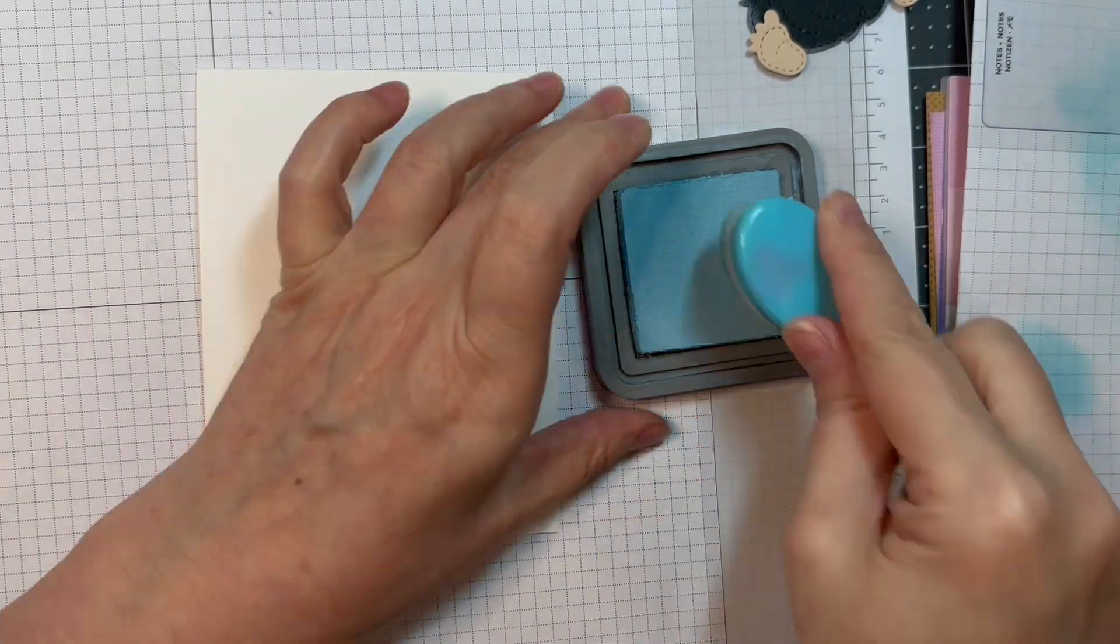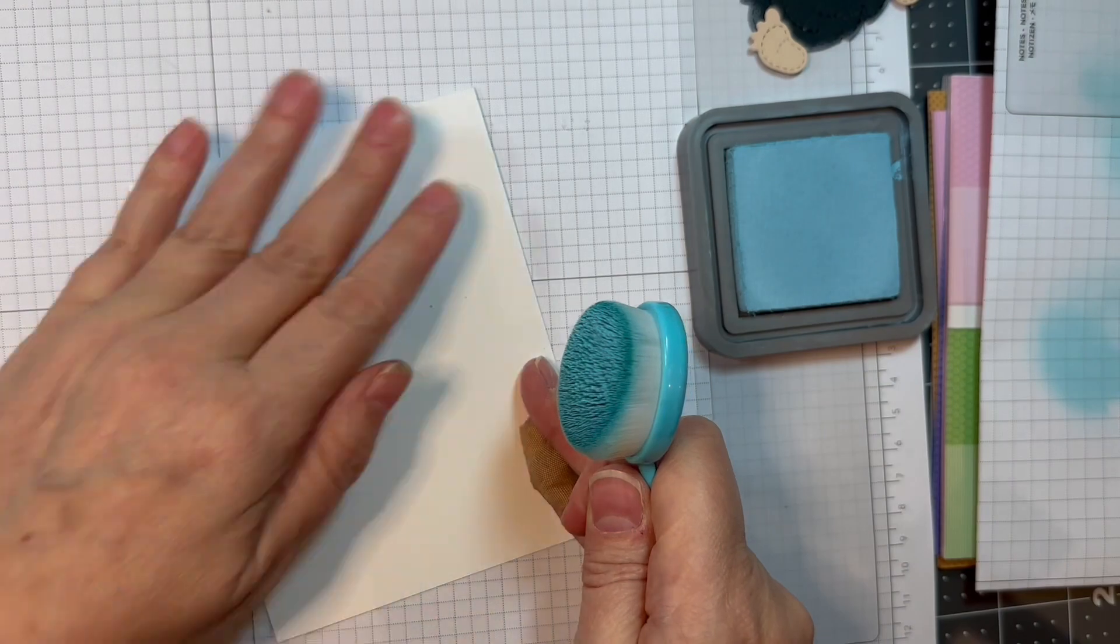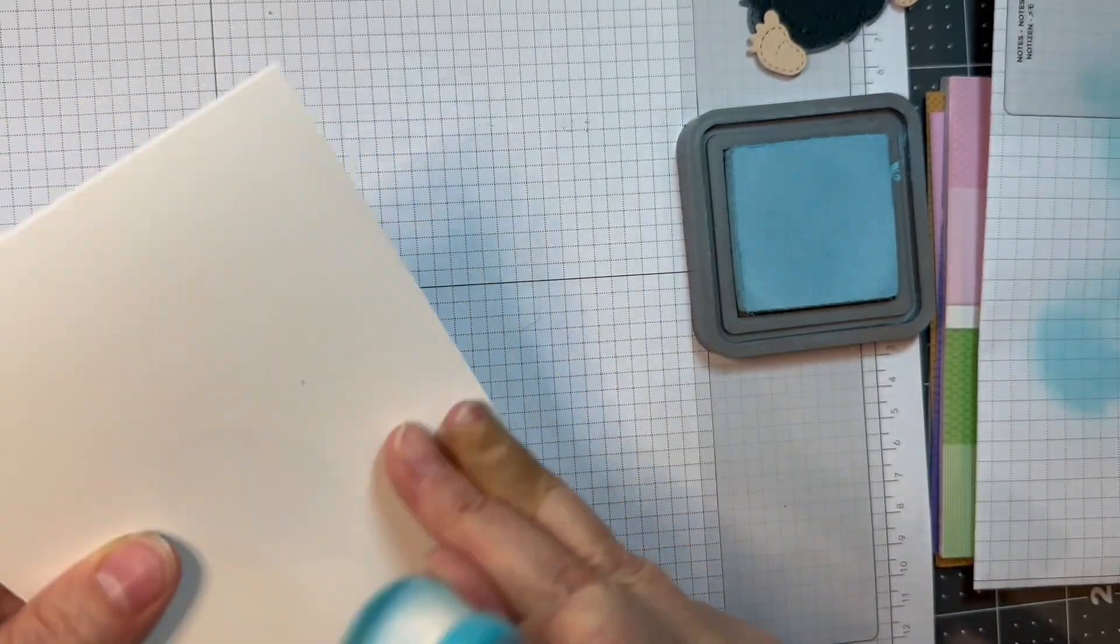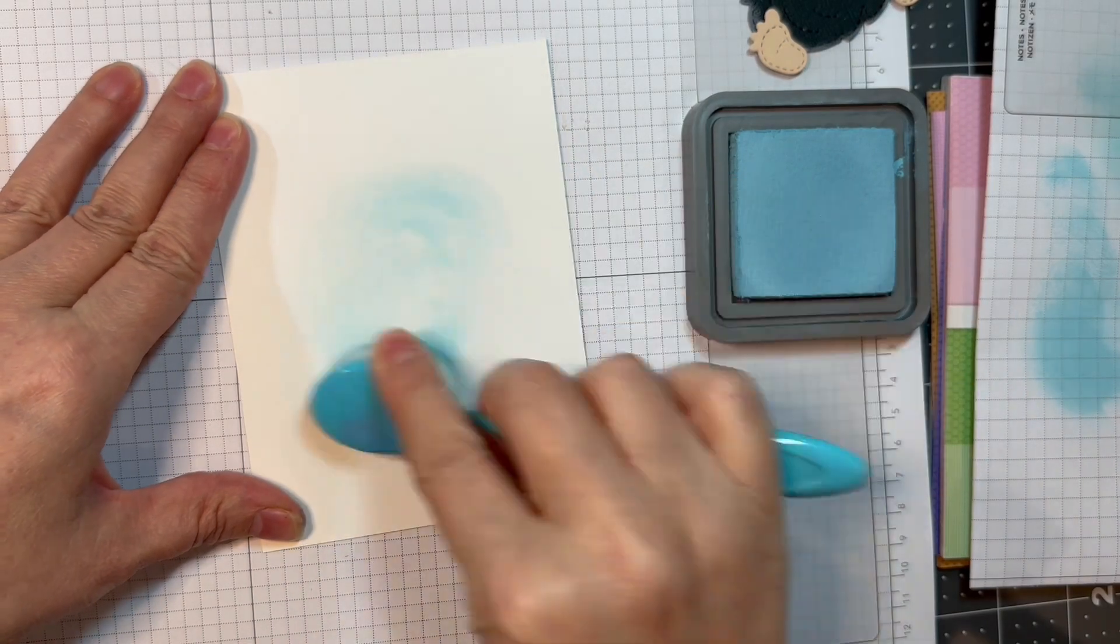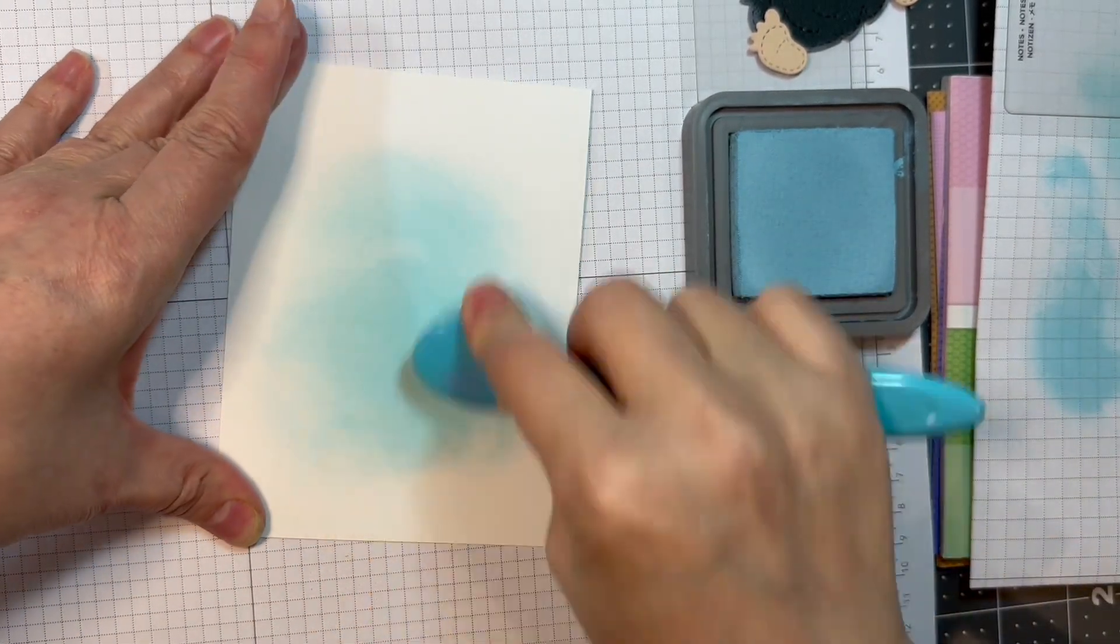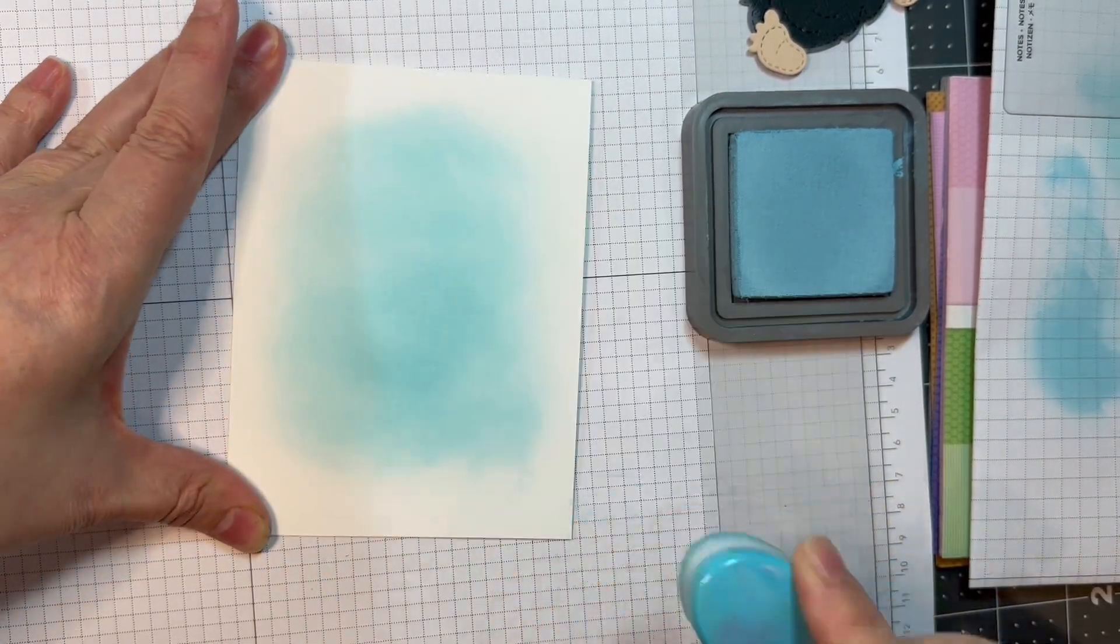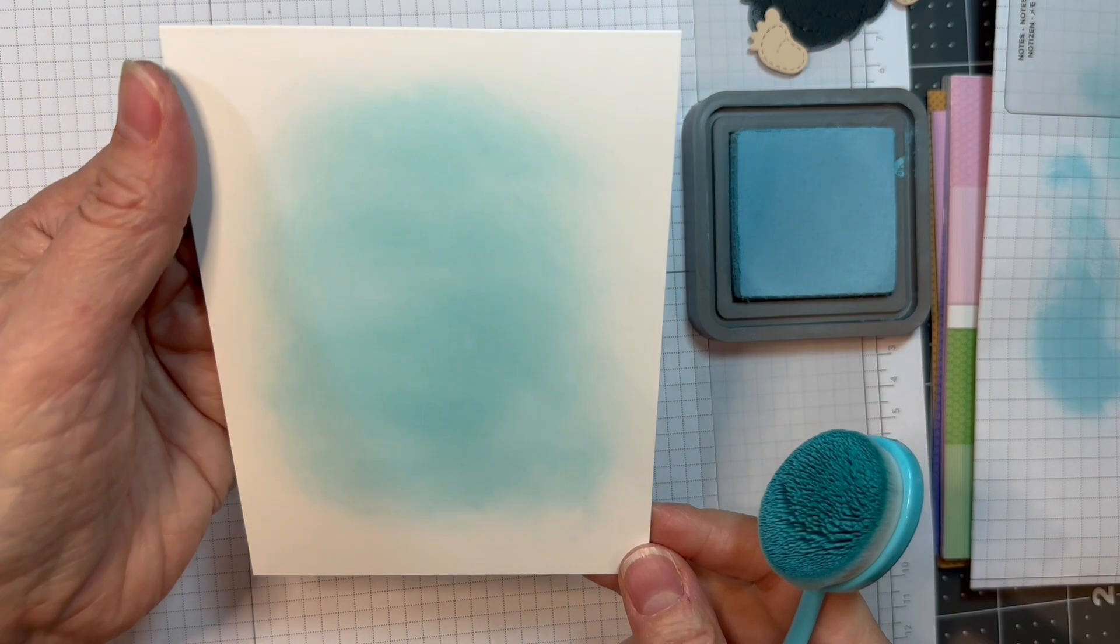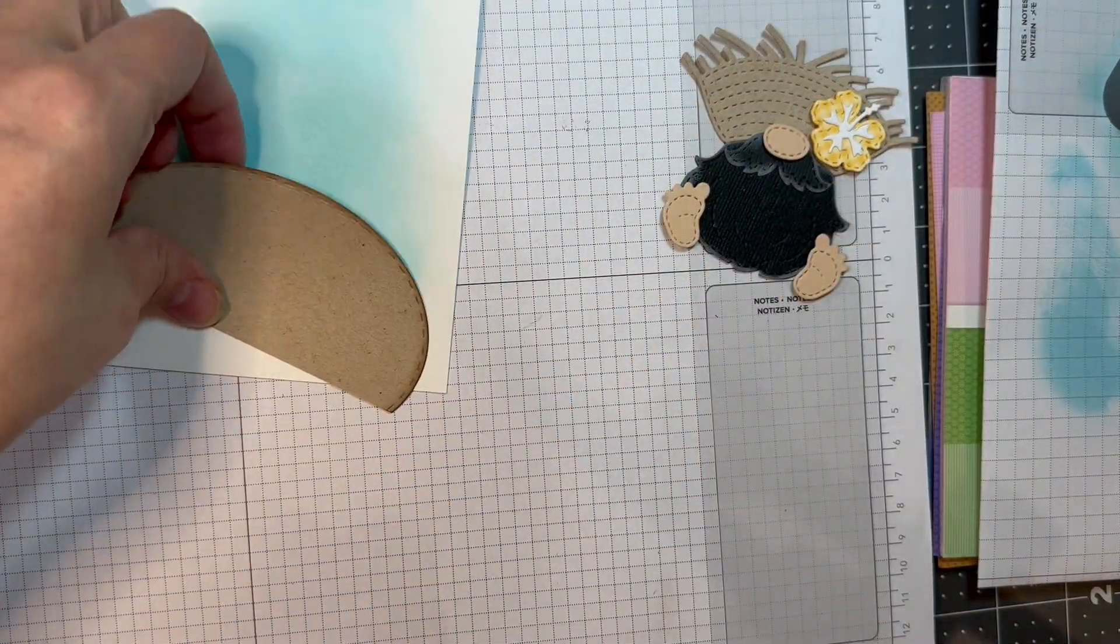Now I'm taking some Tumbled Glass Distress Oxide Ink and I'm going to ink blend sort of in the center of my card front. This doesn't have to be perfect because it's going to be behind my images, but you can get a decent blend and it does settle back into the cardstock a little bit, the dye part of it. The pigment part sits on top.